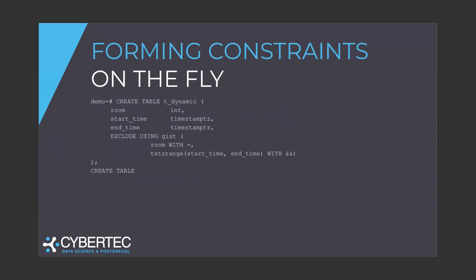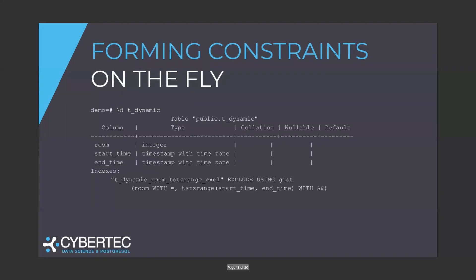In many cases, you want to store data in the traditional way but still make sure those constraints apply. What you can do is form the exclusion constraint on the fly. Here, we have start_time and end_time just like before, but in the EXCLUDE USING GIST clause we basically form the exclusion constraint on the fly. You can still have your data the way you know it, but still benefit from this additional functionality, making sure your data is fully consistent. Looking at the table definition, it's basically just two indexes — an index which was added — and you can see how it has been defined. It's easy to read and easy to see that it's there.